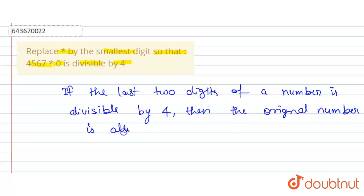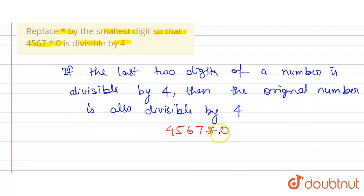So here the number is given as the incomplete number 4567*0. The last digit here is zero. We will find out the second digit, that means the tens digit.